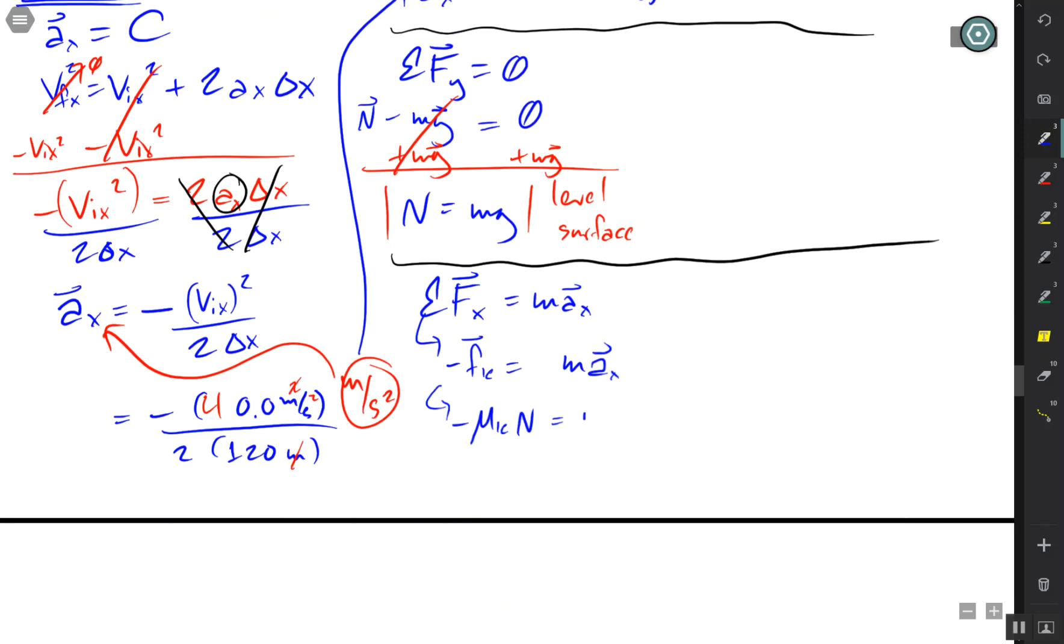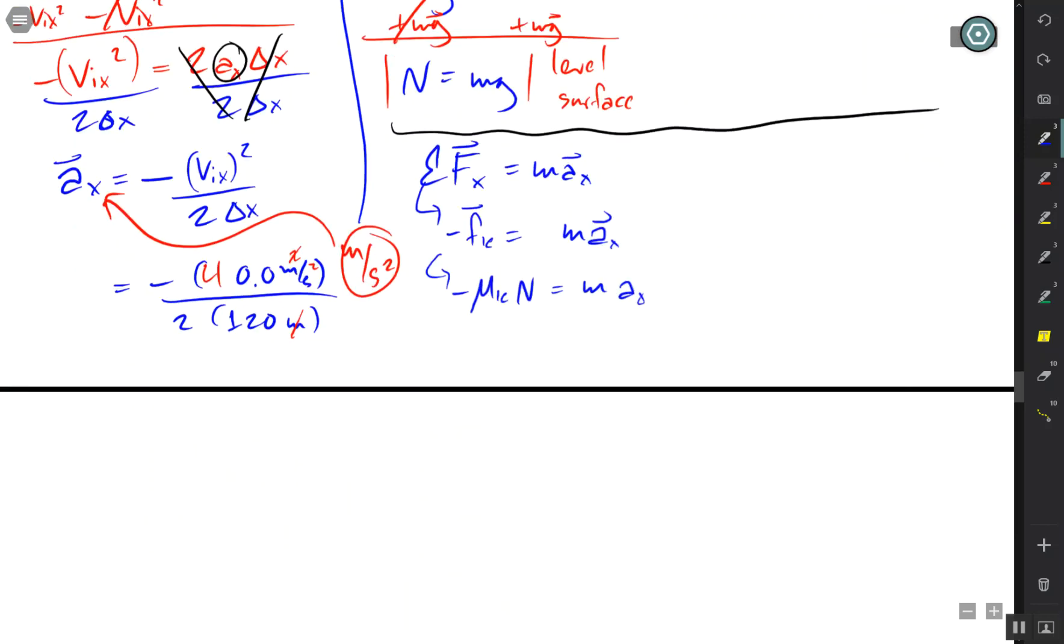And I'm just going to do the magnitudes from this point on. And then, let's divide both sides by. Now let's divide both sides by negative N.